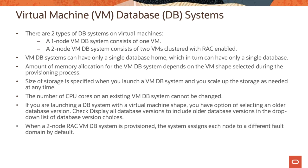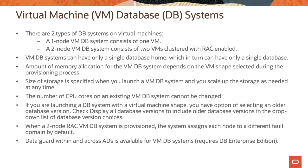When a two-node RAC VMDB system is provisioned, the system assigns each node to a different fault domain by default. Data Guard within and across availability domains is available for VMDB systems, which requires database Enterprise Edition.